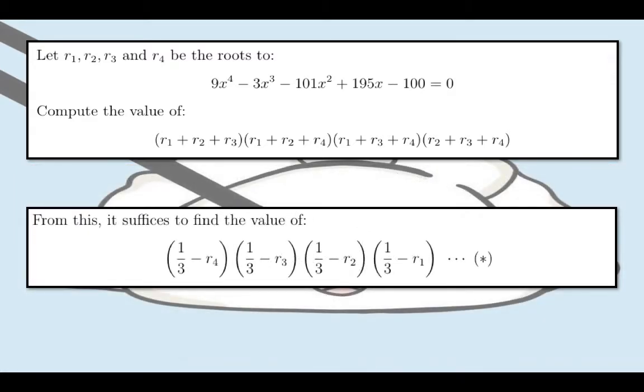From this, it suffices to find the value of 1 third minus r sub 4 times 1 third minus r sub 3 times 1 third minus r sub 2 times 1 third minus r sub 1. Let's call this expression star.